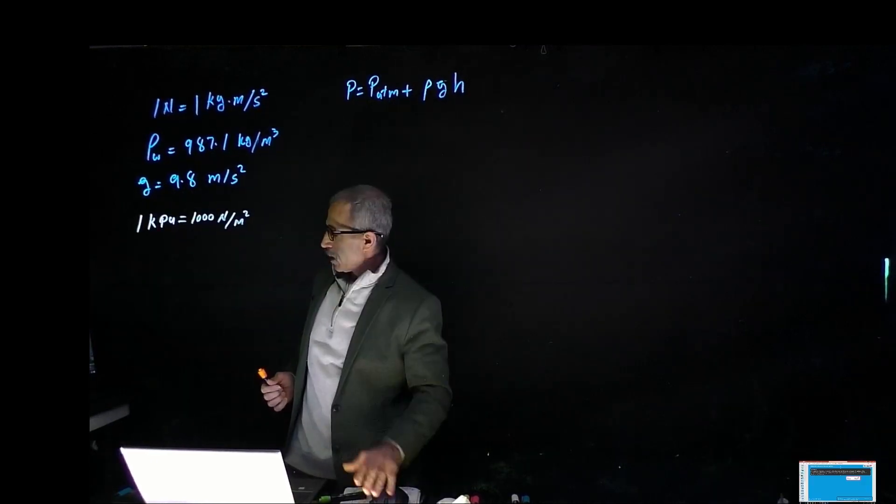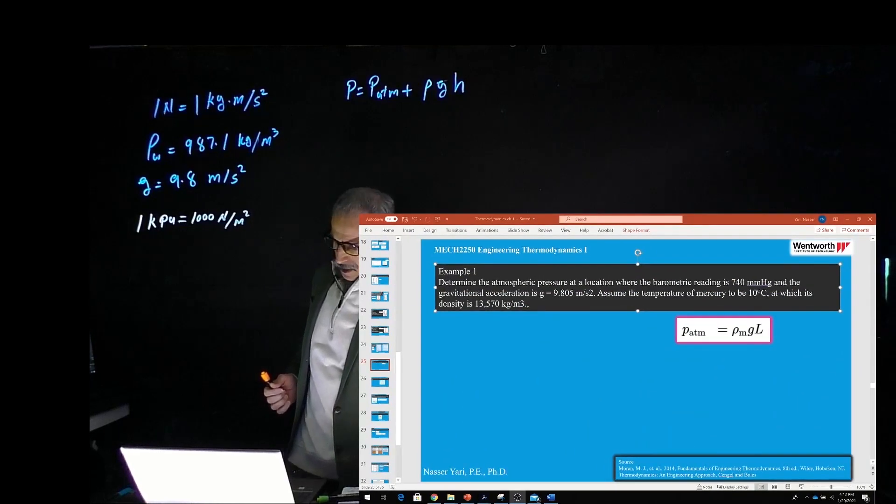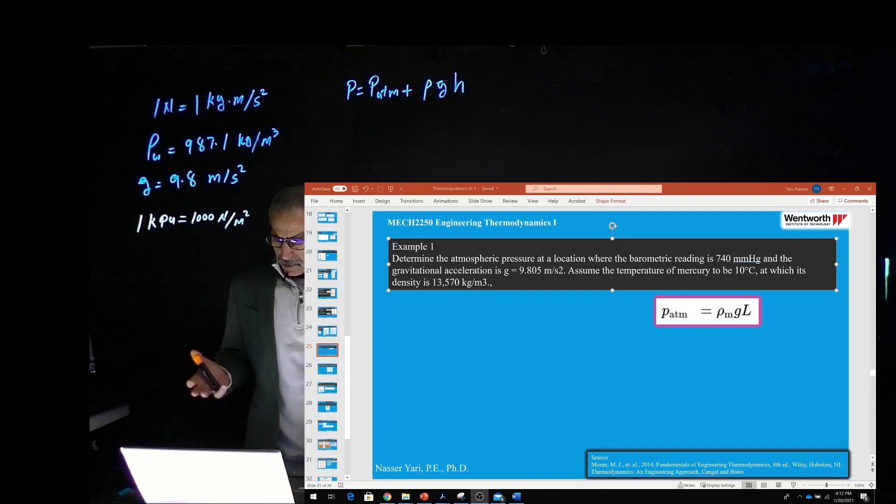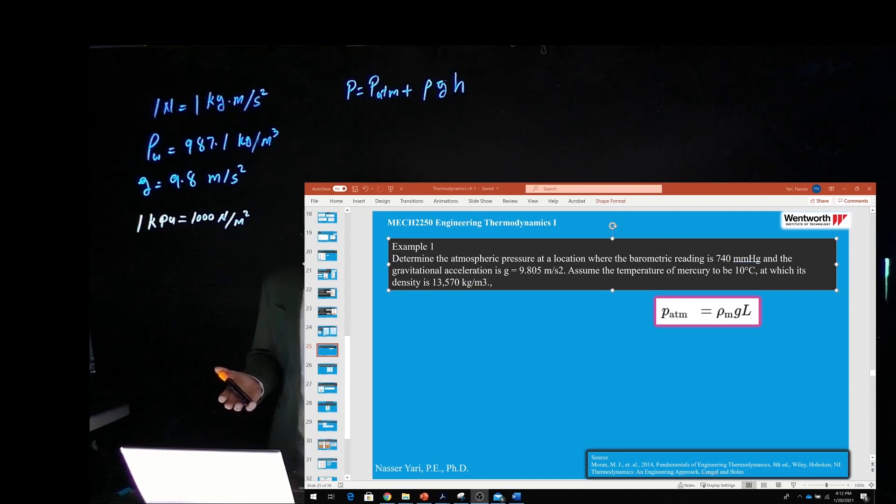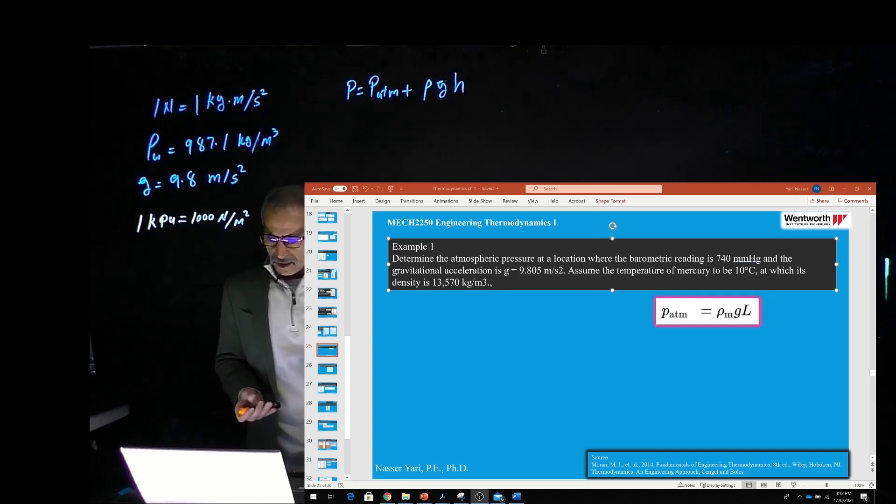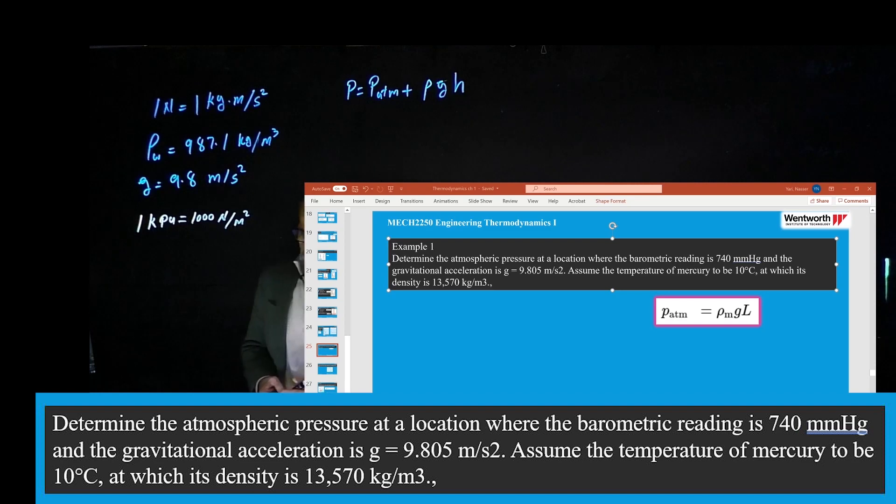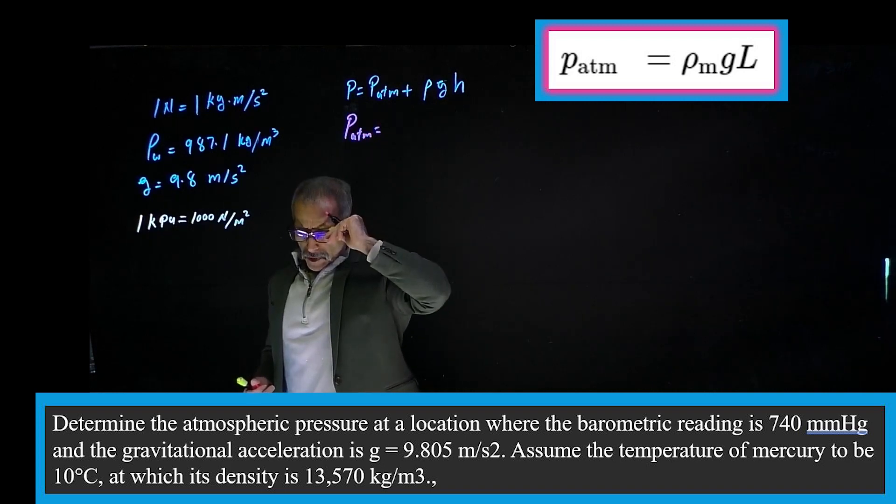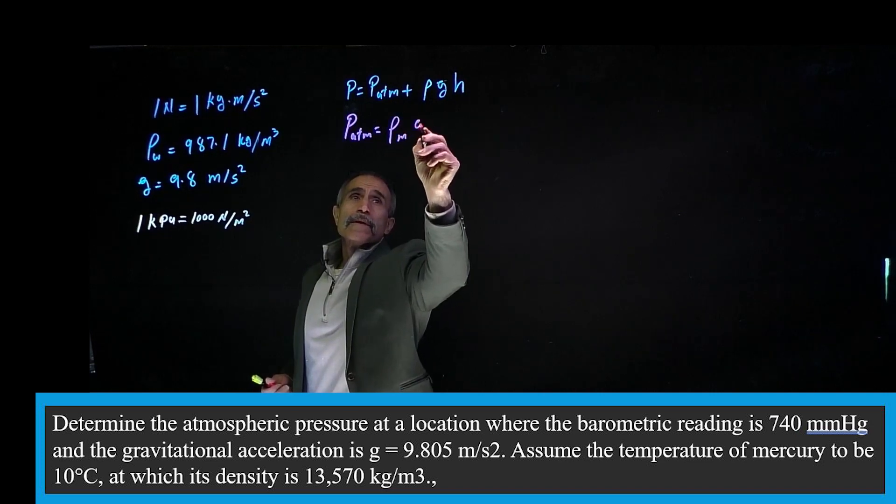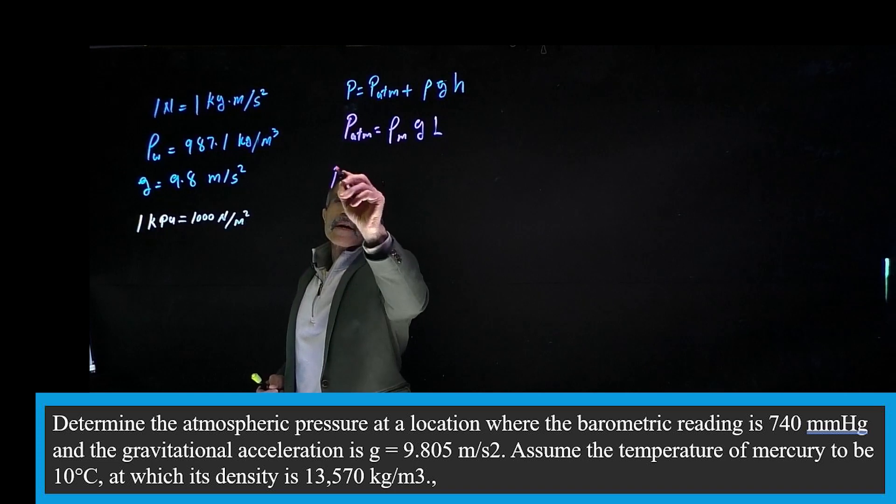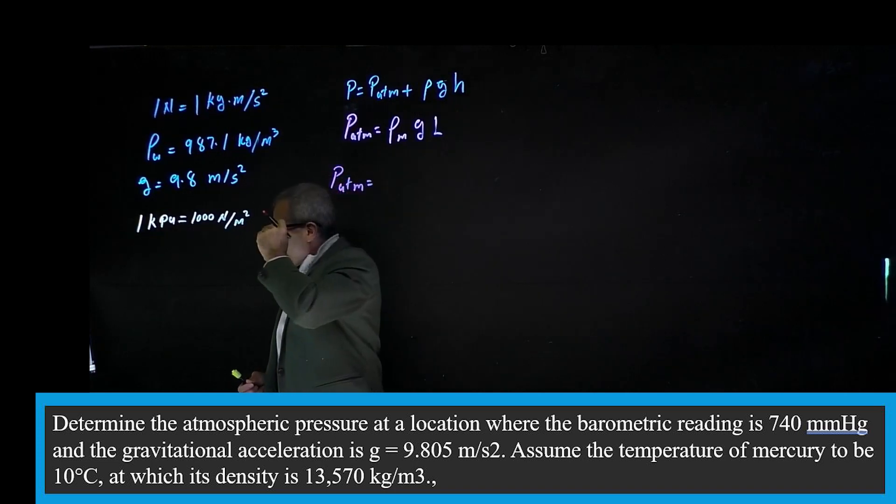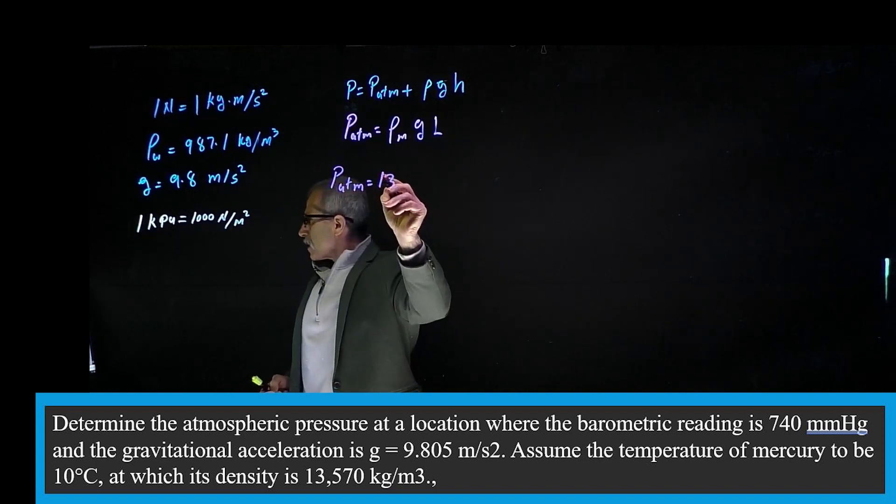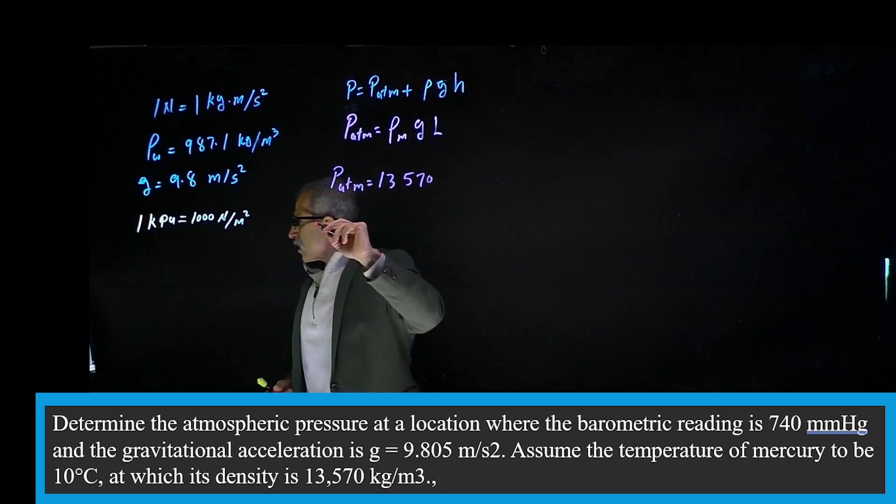Let's do one more problem. Let me bring it up on the board so you can see it. It says determine the atmosphere pressure at the location where the barometer reads 740 millimeter mercury and the gravitational force is 9.805 meters per second squared at the temperature of 10 degrees centigrade, which the density is 13,570 kilograms per cubic meter.